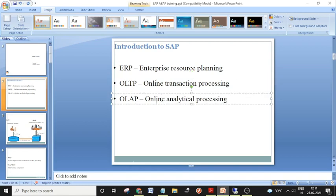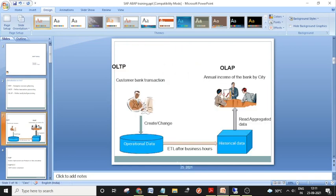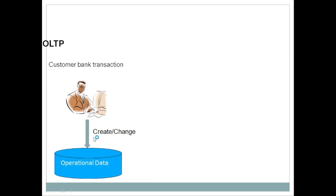This is an example of an OLTP system. Customer and transaction data in OLTP systems can be created, changed, or deleted. This is called operational data — the data which is currently required in day-to-day operations.